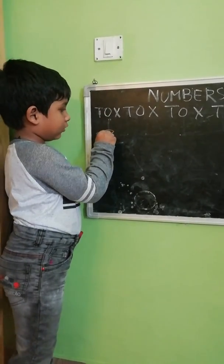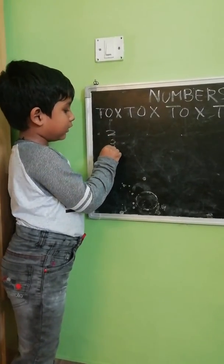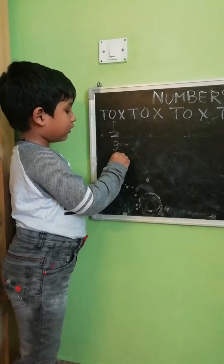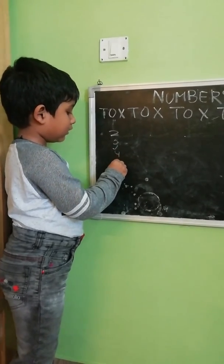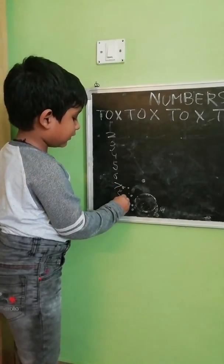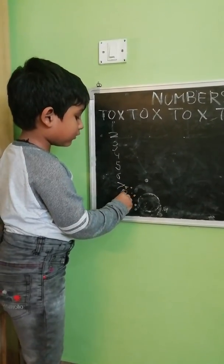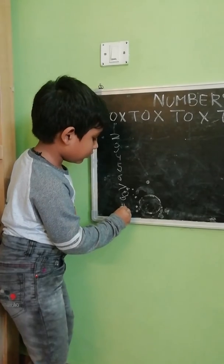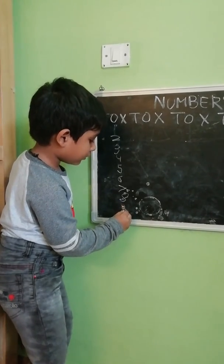We write 1 and 2 and 3, 4, 5, 6, 7, 8, 9, 10.